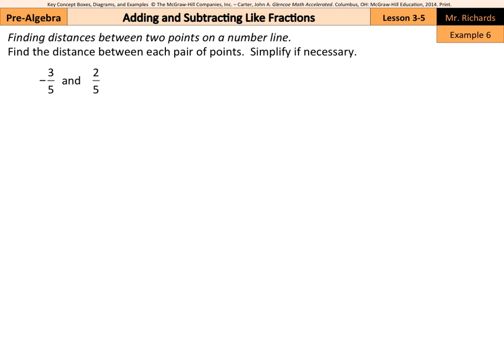So as I look in example 6 to find distances between two points on a number line, find the distance between each pair of points and simplify if necessary. Well, for negative 3 fifths and 2 fifths, we have a common denominator of 5. And so if I were to draw a number line, and I'll put 0 here, 1 out here, negative 1 over here, we're going to divide this into different parts.